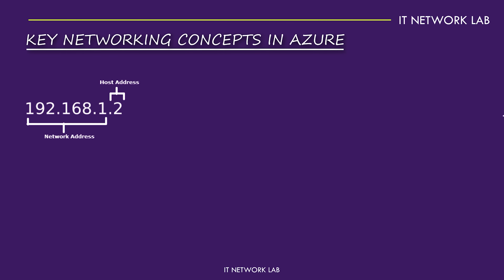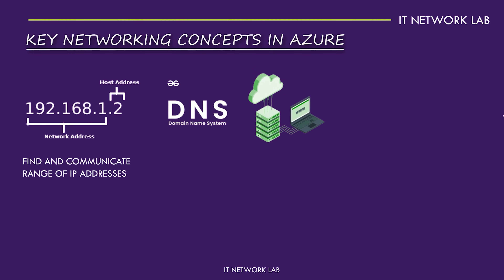IP addressing is how devices on a network find and communicate with each other. In Azure, each VNet gets a range of IP addresses that you can allocate to your resources. DNS, or Domain Name System, is like the phonebook of the internet — it translates human-friendly domain names into IP addresses that computers use to identify each other. Azure provides robust DNS services to ensure your applications can always find what they need.